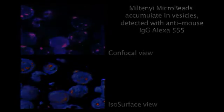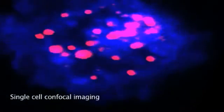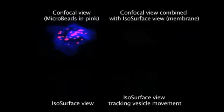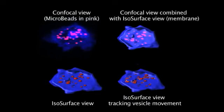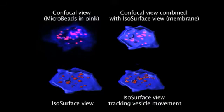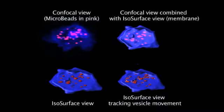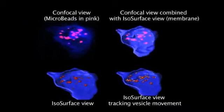Let's focus on a single cell. The top left is the confocal image, while the top right is a mix of confocal image of the beads and isosurface view of the cell membrane. The bottom left is the isosurface view, and the bottom right is the isosurface view tracking vesicle movements.